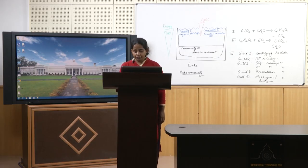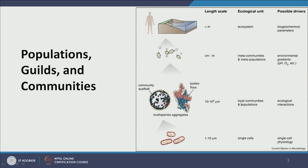To revise: we have single-cell physiology, then local communities and populations — a population is microbes of the same species, while communities are different populations existing together. Then we have metacommunities and metapopulations, such as the lake example. Finally, we have the ecosystem — the entire region including aquatic, terrestrial, and air components. The range in size varies: a single cell is 1–10 micrometers, communities up to 1000 micrometers, metacommunities up to meters, and ecosystems many meters.